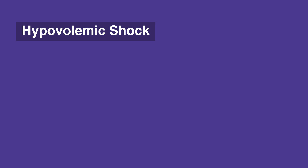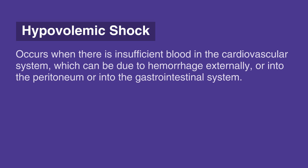Hypovolemic shock is the most common type of shock and perhaps the easiest to understand. It occurs when there's insufficient blood in the cardiovascular system, which can be due to hemorrhage externally or into the peritoneum or into the gastrointestinal system.